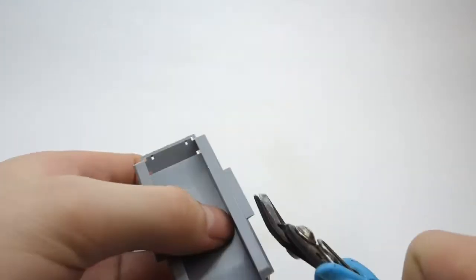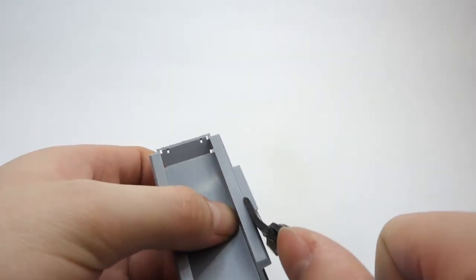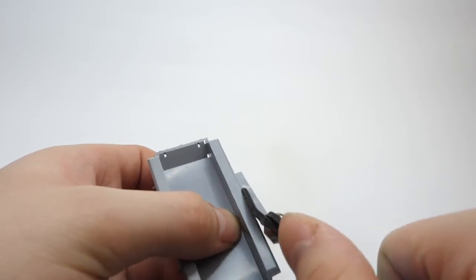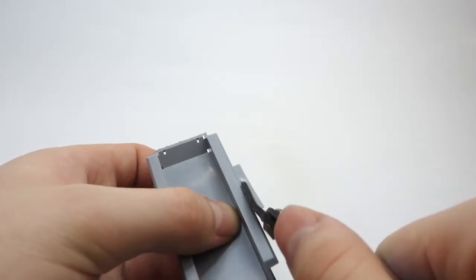I started working on this model from the lower hull, where I removed sprue remainings and those extensions which would get in the way later during attaching photo-etched fenders.